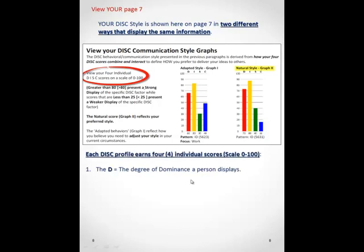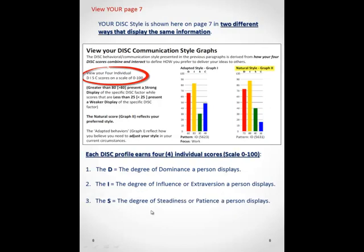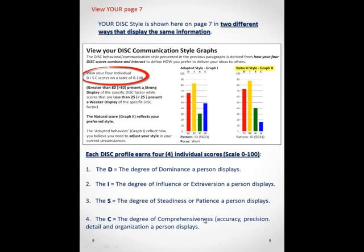The D is the dominance. The I is the influence or extraversion. The S is steadiness or patience. And the C represents the comprehensiveness, detail, organization, precision, etc.